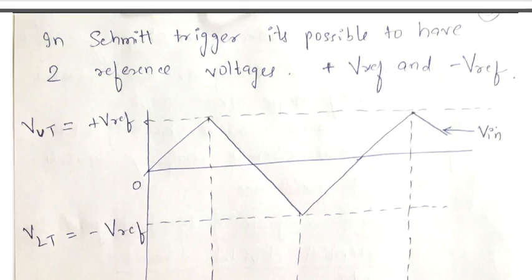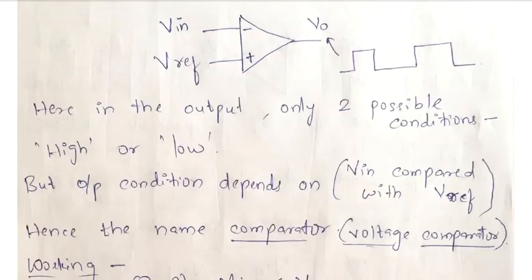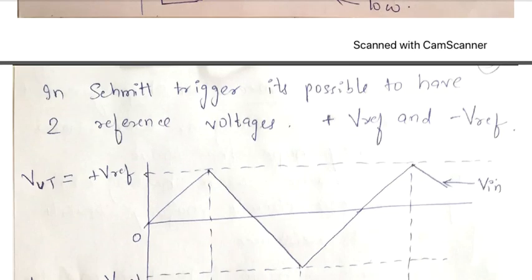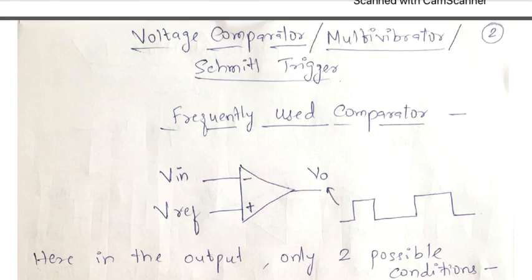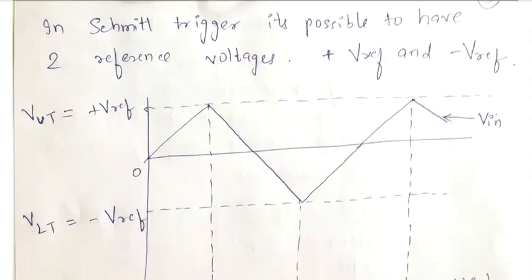This is Part 2 of the function generator video. In the earlier video, you saw what a voltage comparator is — I showed you the circuit, the equations, and the waveforms. Now, I mentioned that the voltage comparator is also called a Schmitt trigger with slight variations. Voltage comparator and Schmitt trigger are almost the same with slight variations. In a function generator, we are going to use a Schmitt trigger and not a voltage comparator. But to know what a Schmitt trigger is, you had to know what a voltage comparator is — hence I initially told you about that.